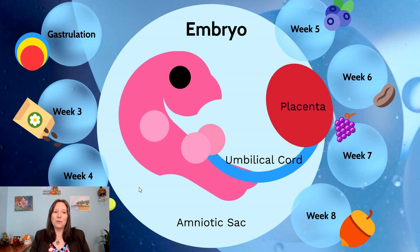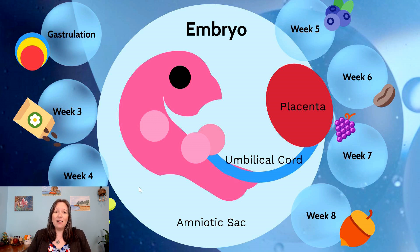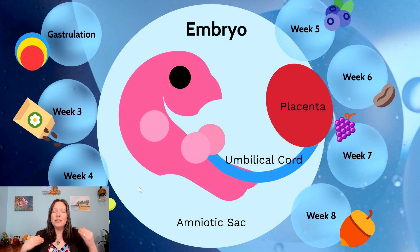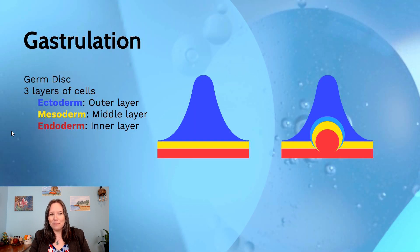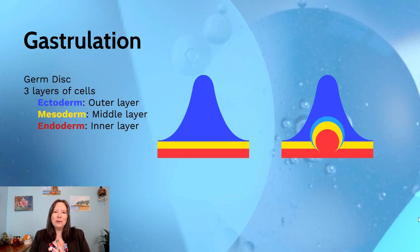It's important to understand the roles of the placenta, umbilical cord, and amniotic sac in supporting embryo or fetal growth. In the embryo stage, we don't count development in days like we did for the zygote — instead we look at weeks. Before we get to those weeks, it's important to understand how we went from a ball of cells to an embryo, which is through the process known as gastrulation.